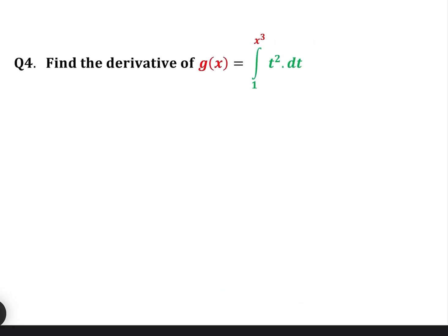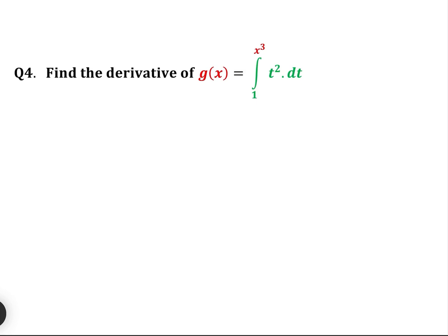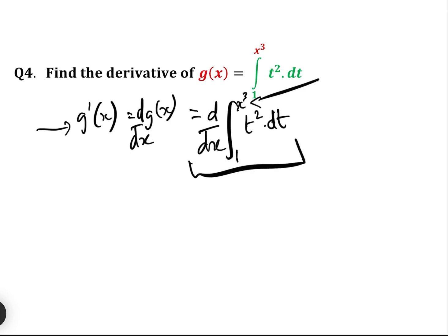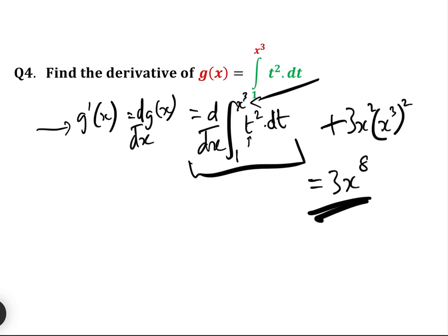For Question 4 we want to find g'(x), where g(x) is defined as the integral from x³ to 1 of t² dt. So g'(x) = d/dx of that integral. Applying the three rules by inspection: Rule 1, x³ is in the right place so we have a plus; Rule 2, the derivative of x³ is 3x²; Rule 3, replace t by x³ giving (x³)² = x⁶. So the answer is 3x²·x⁶ = 3x⁸.